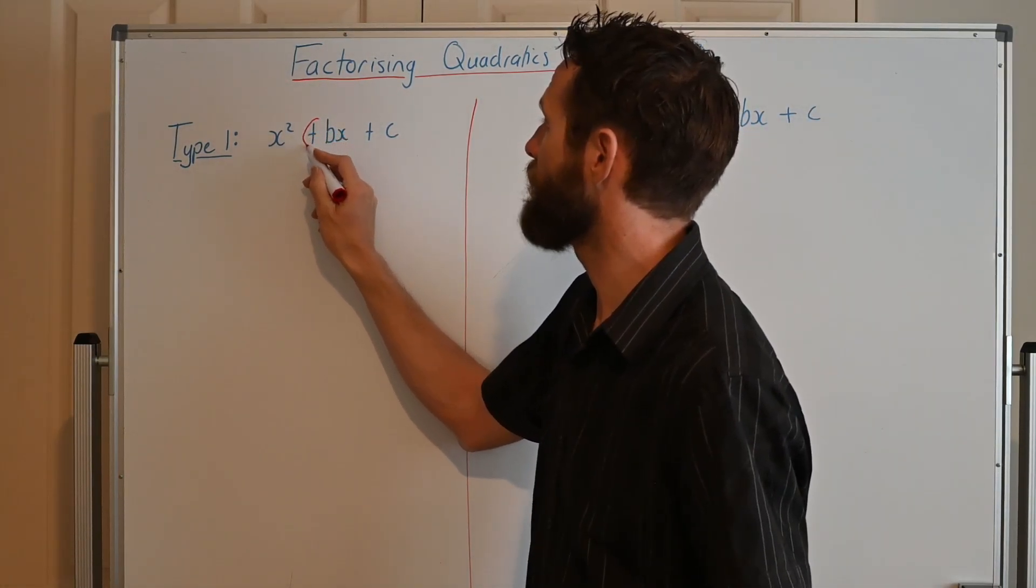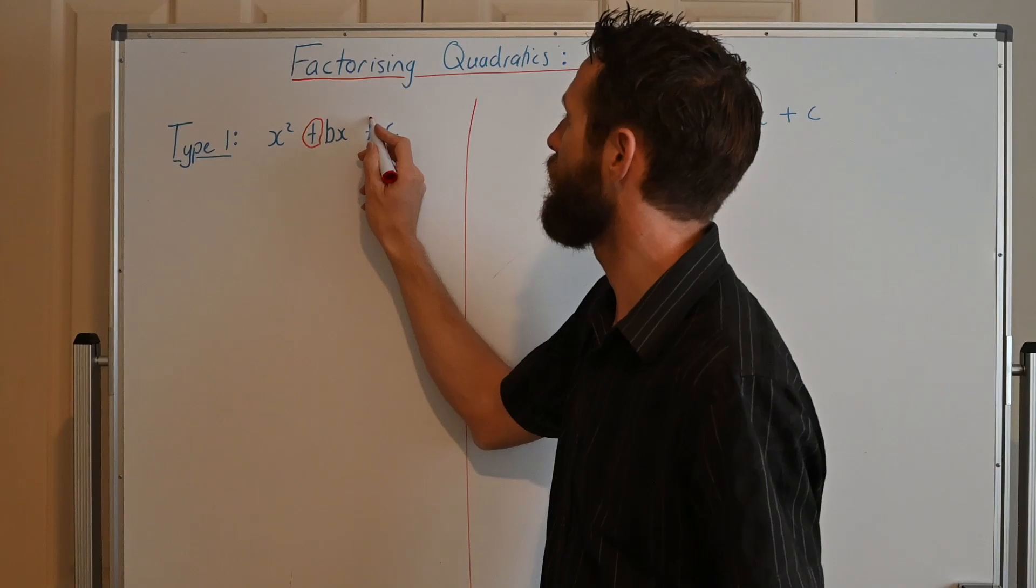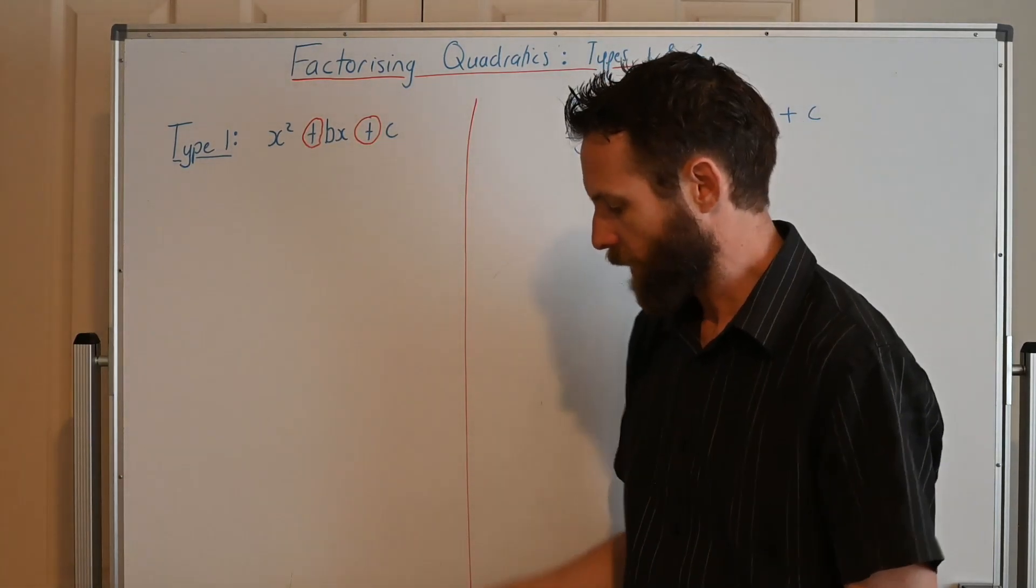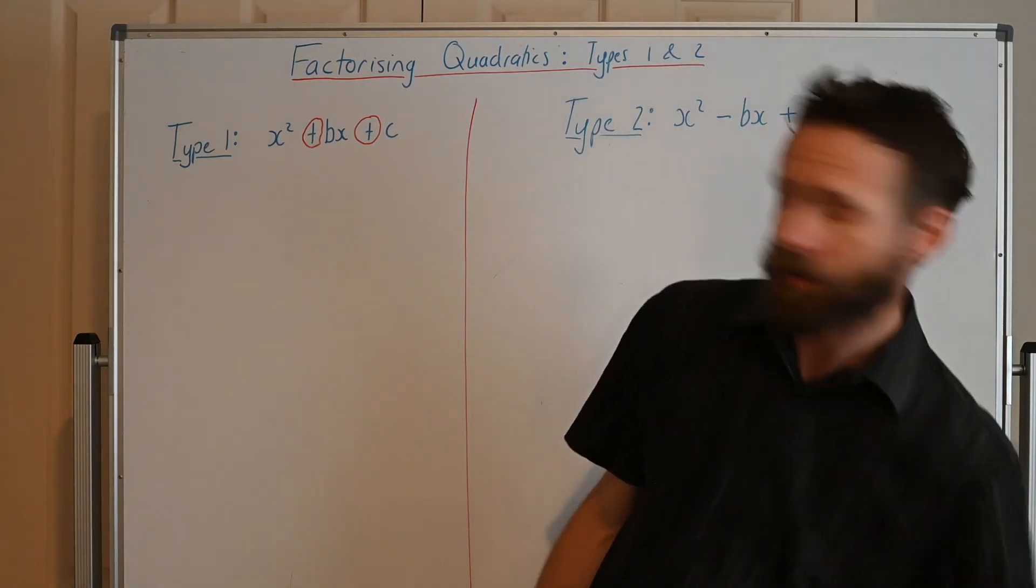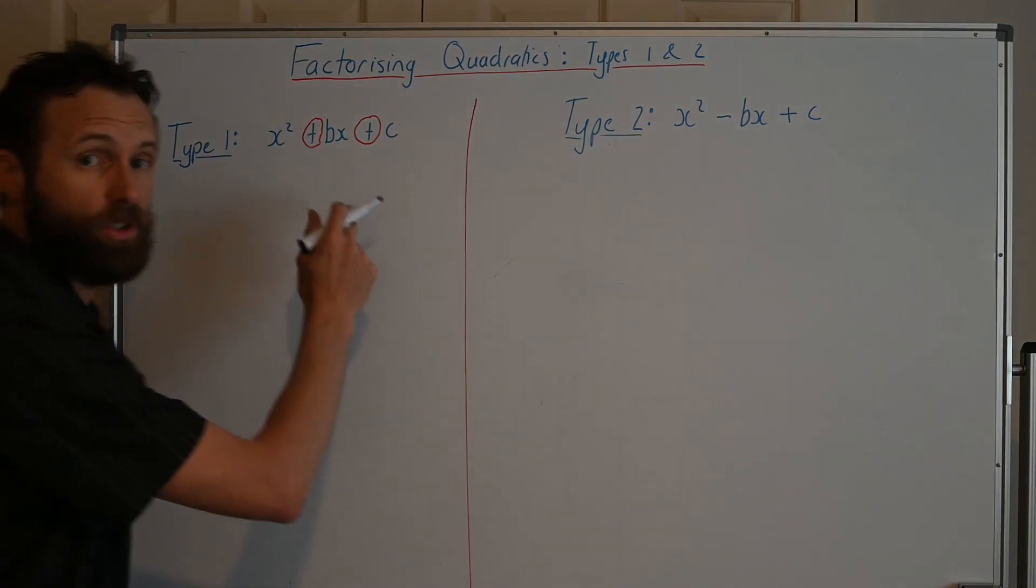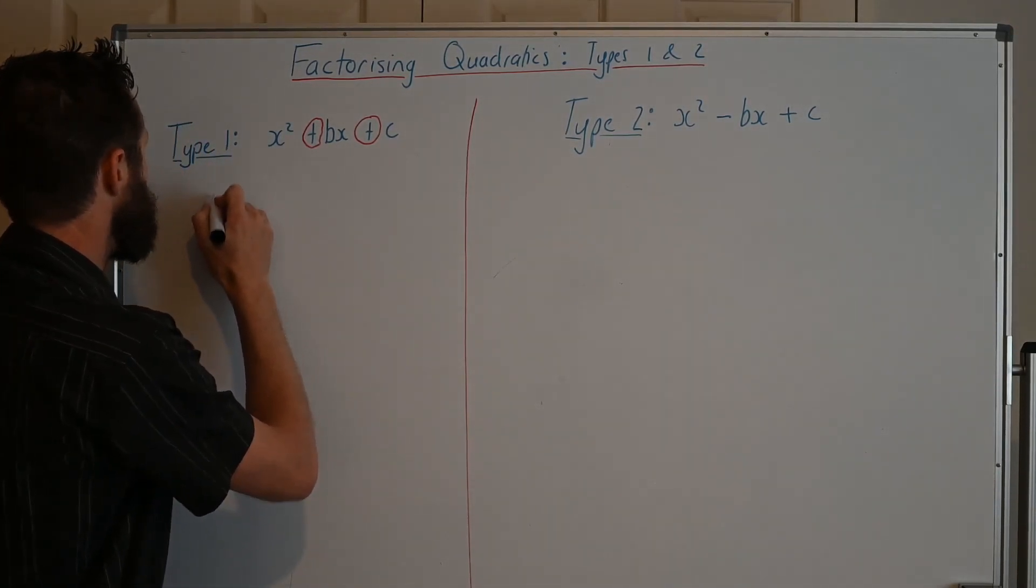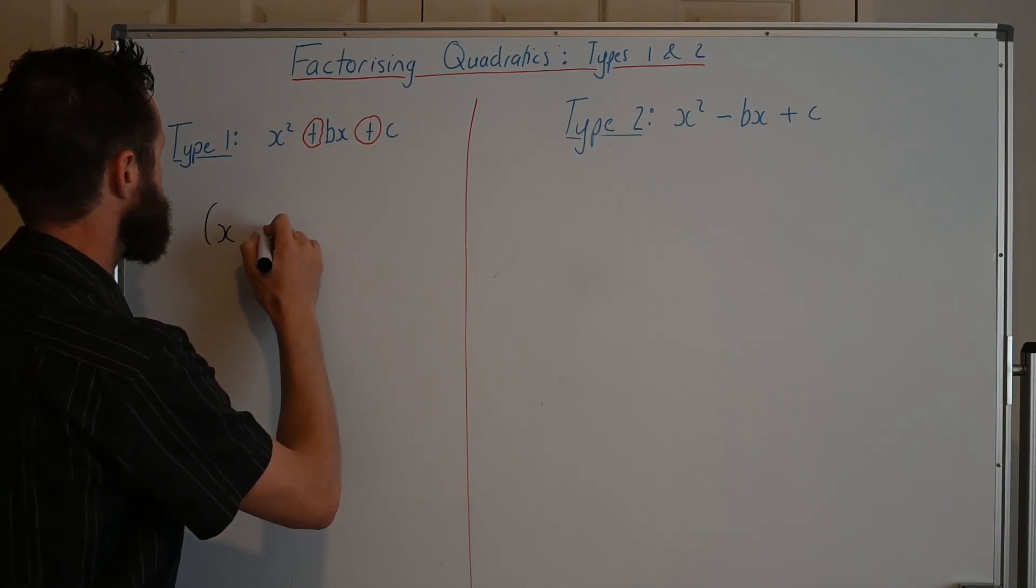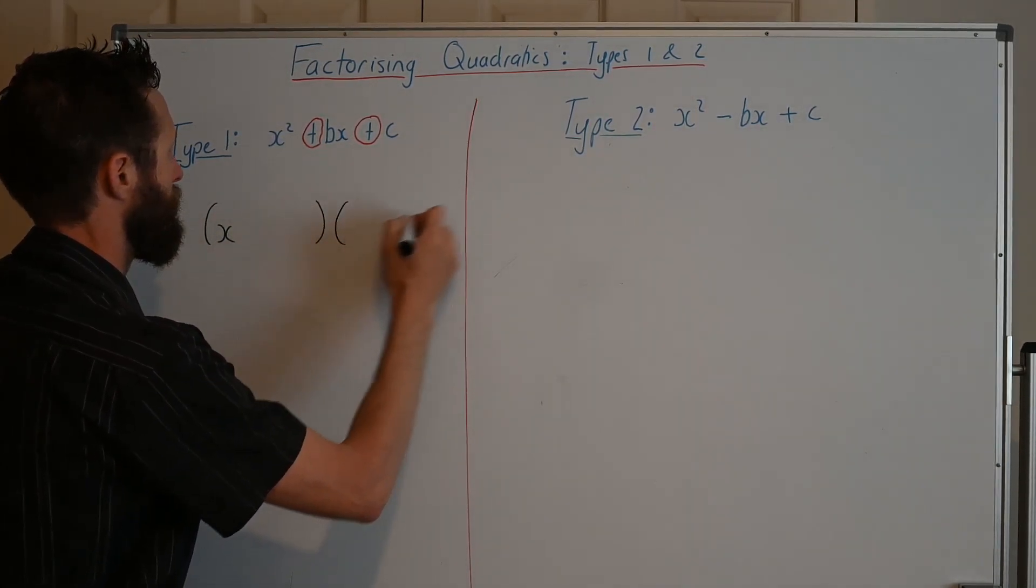Now, the important thing about this type, the way you identify it, is if you've got these two pluses. A plus here and a plus there. Now, what we do is we need to think about how do we get this result in the first place. And remember, we've got FOIL. So I'll give you an example of a quadratic of this type.